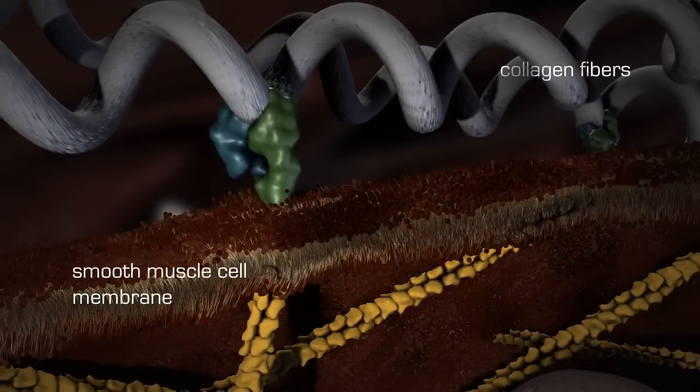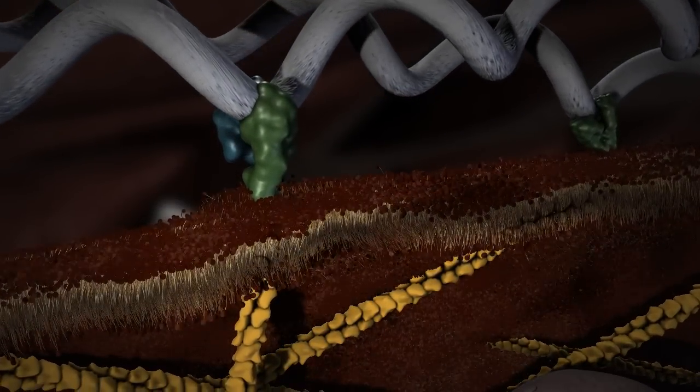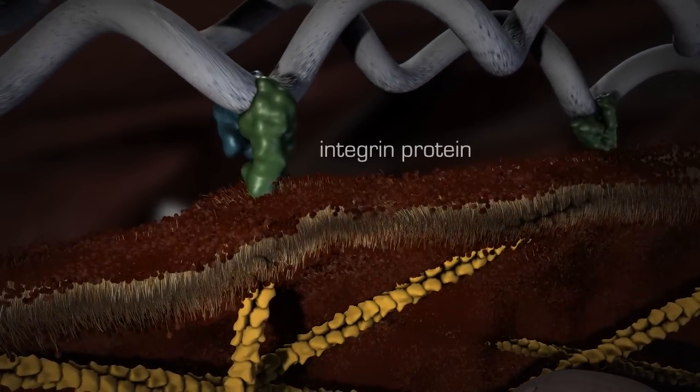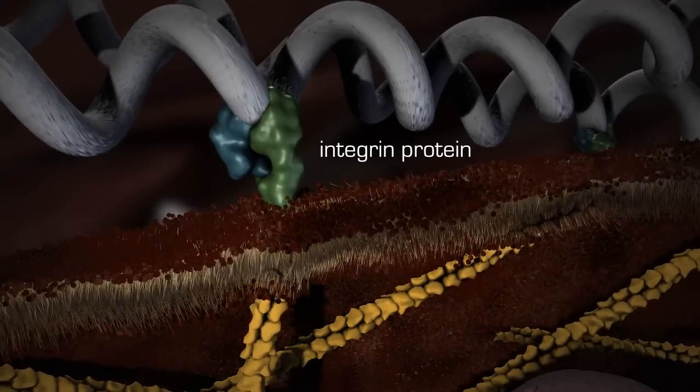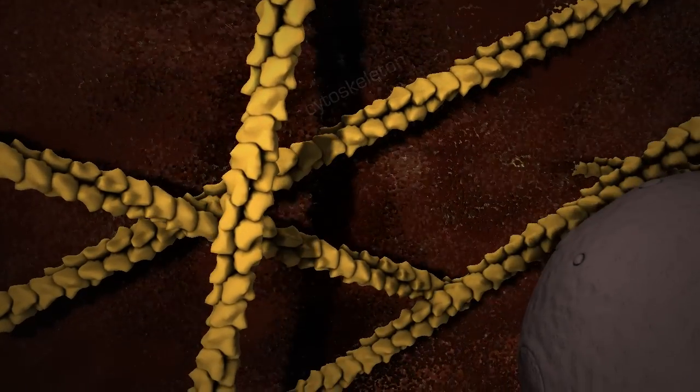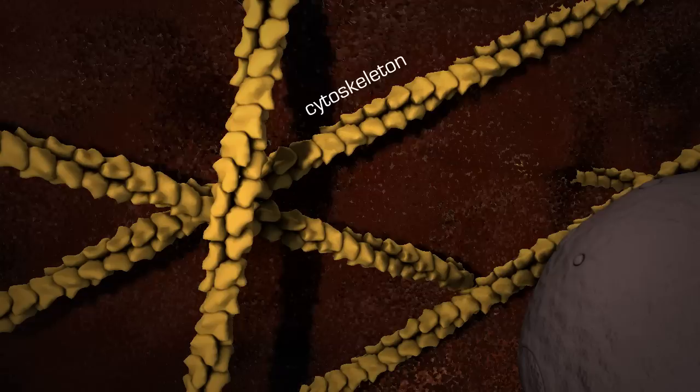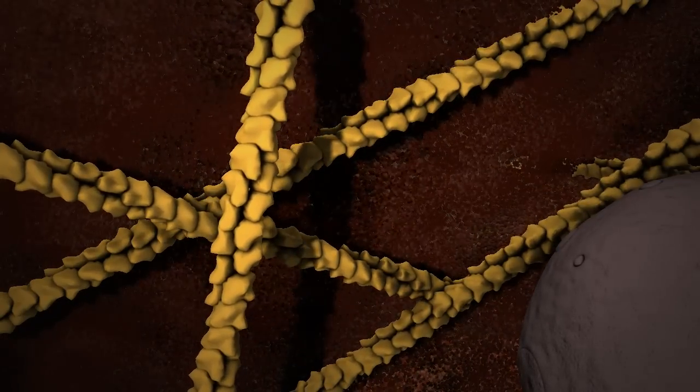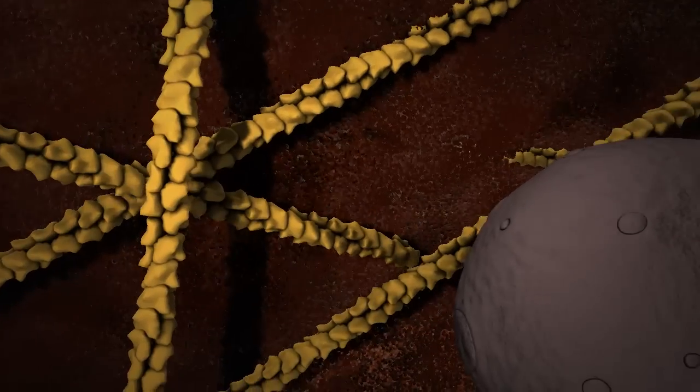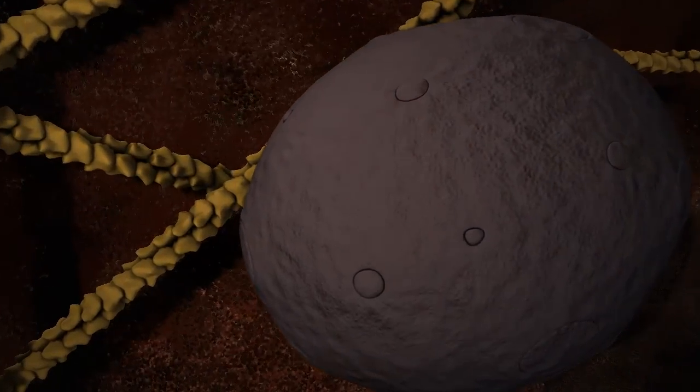As collagen fibers and other components in the ECM stretch, they transmit pressure to the smooth muscle cells via their attachment to cell surface integrin proteins. This force is then transmitted to the cytoskeleton within the muscle cells. Thus, each cell recognizes this increased pressure in the environment and sends a cascade of signals to its nucleus.